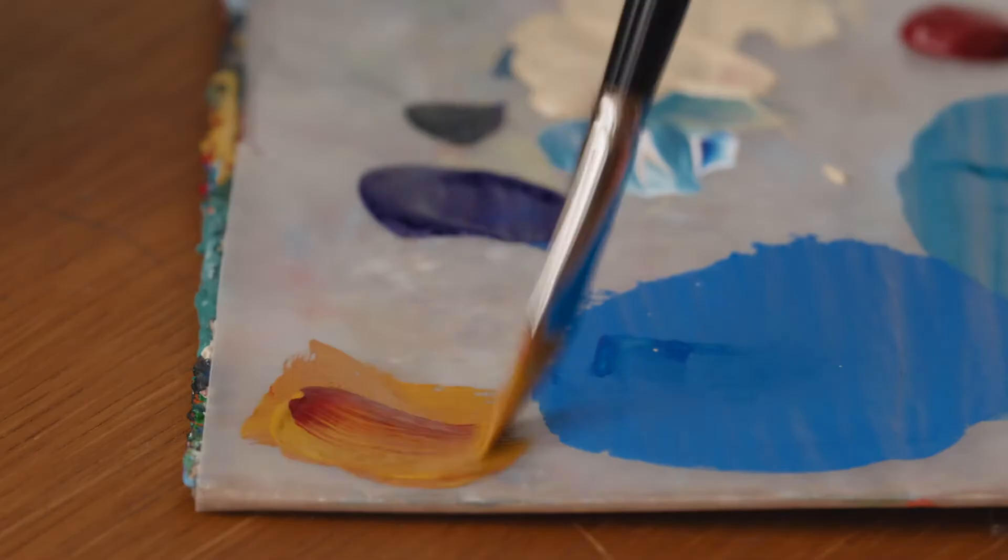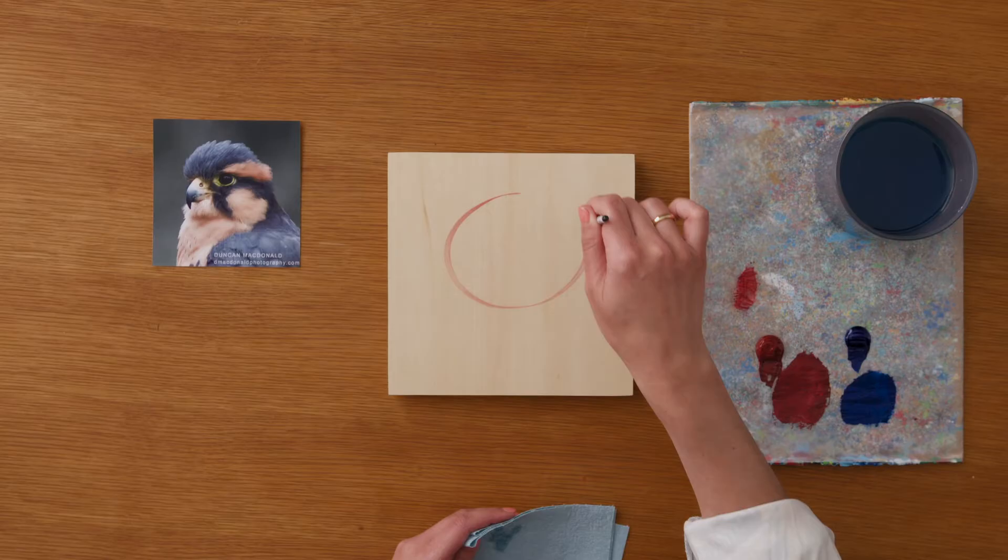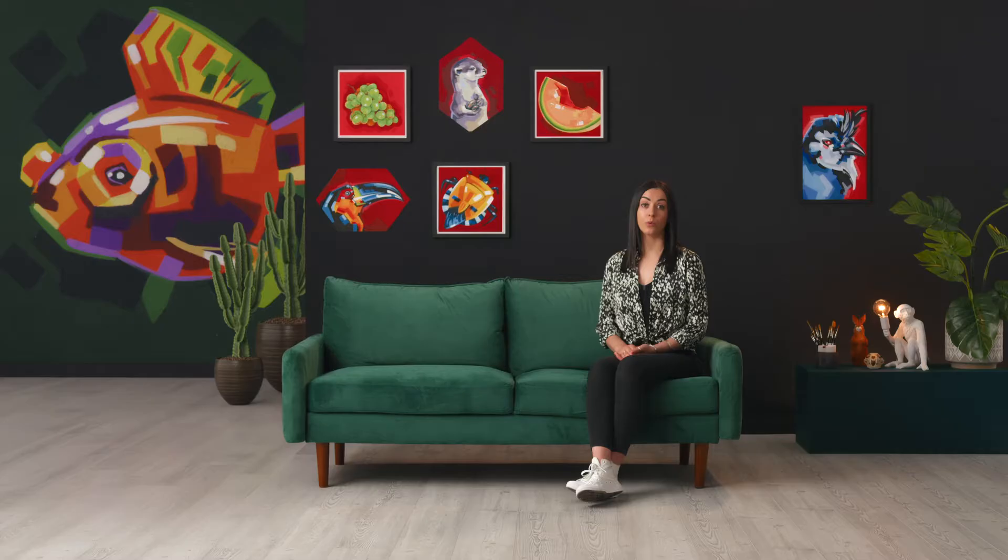In this Domestika course, you'll learn how to rethink the way you see color, shape, and detail. For the final project, you will break down an image visually to create a bright and stylized acrylic painting.